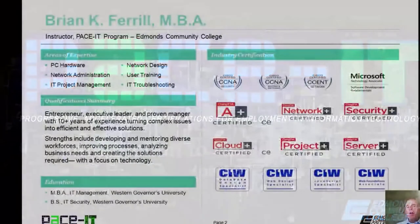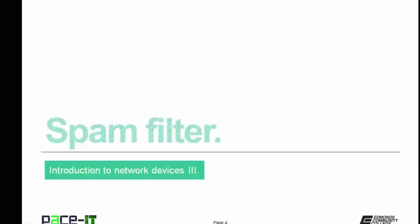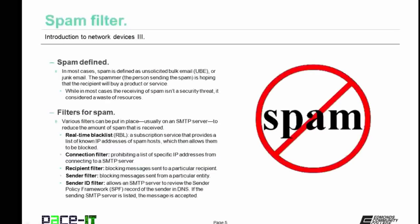Hello, I'm Brian Farrell and welcome to PaceIT's session on introduction to network devices part three. Today, I'm going to be talking about spam filters, and then we're going to conclude with a brief discussion on some network devices. In most cases, spam is defined as unsolicited bulk email, or UBE, sometimes called junk mail. The spammer is hoping that the recipient will buy a product or service. While receiving spam isn't necessarily a security threat in itself, it is considered a waste of resources, which in a way is a security threat.